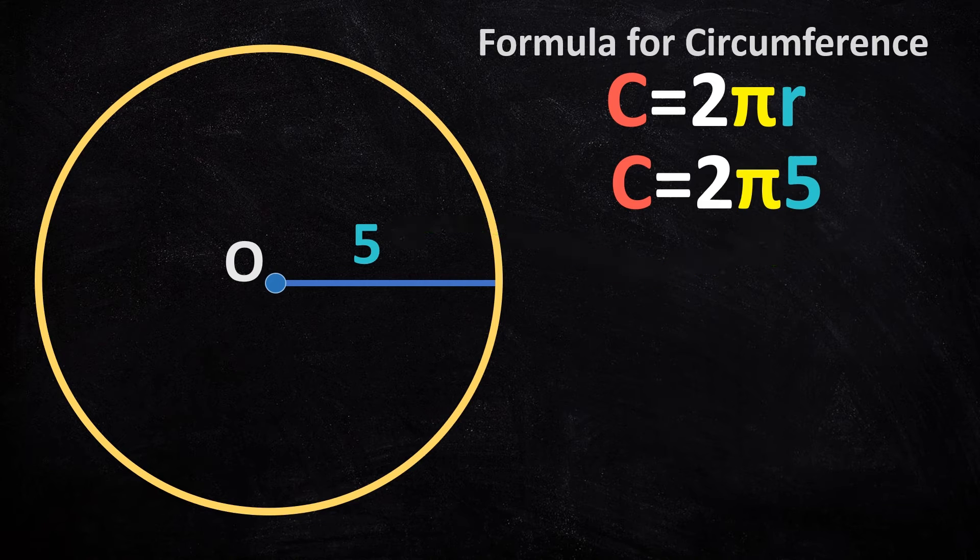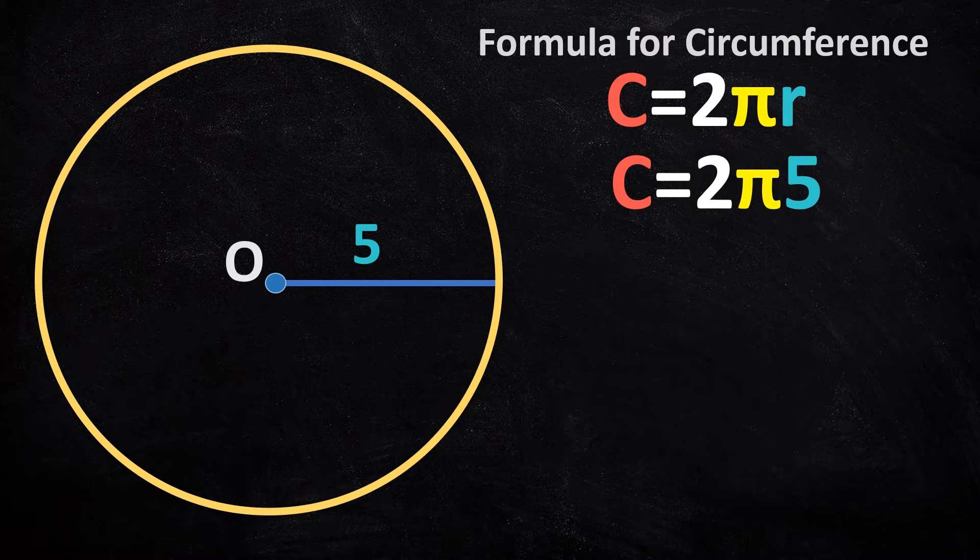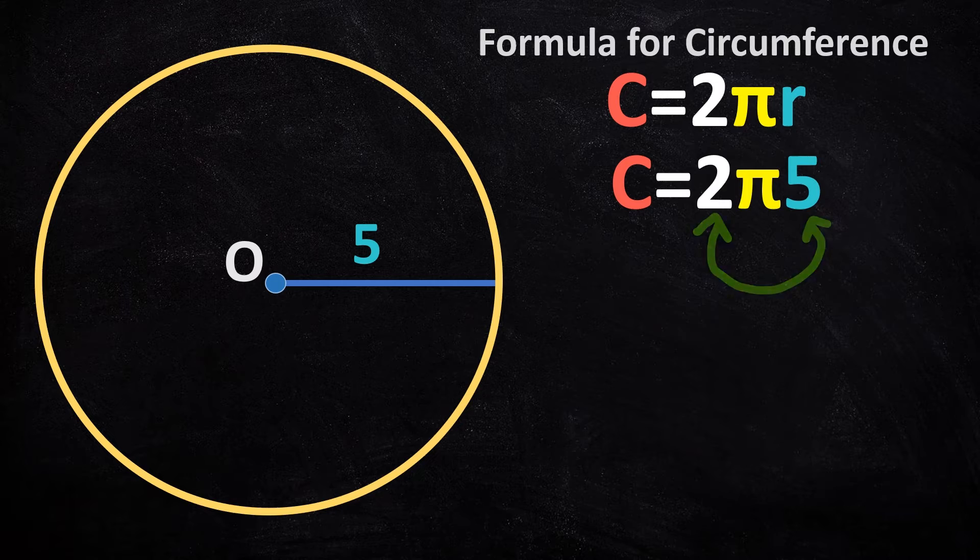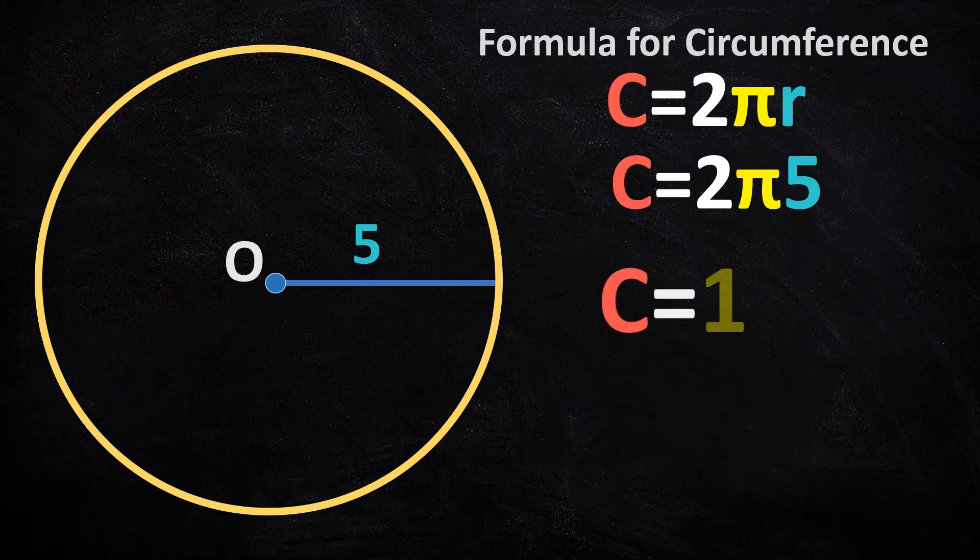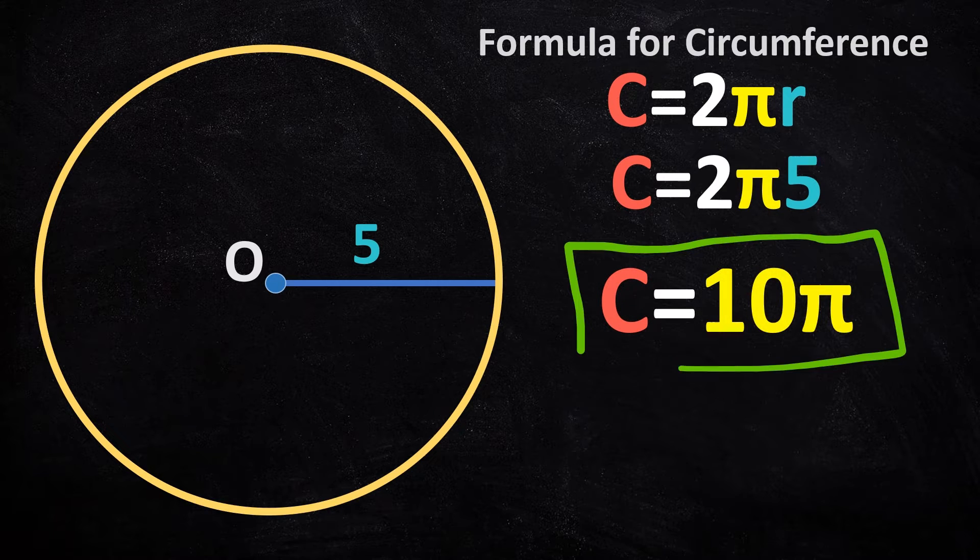The order doesn't matter in multiplication, so let's multiply this 2 and this 5. We get the circumference equals 10 pi. Pretty simple, isn't it?